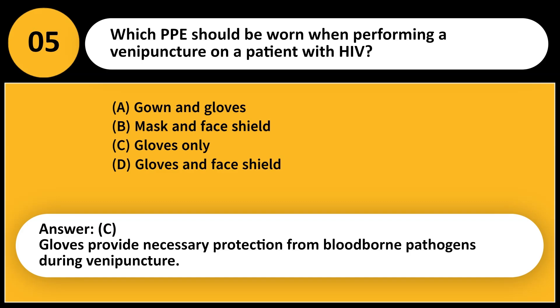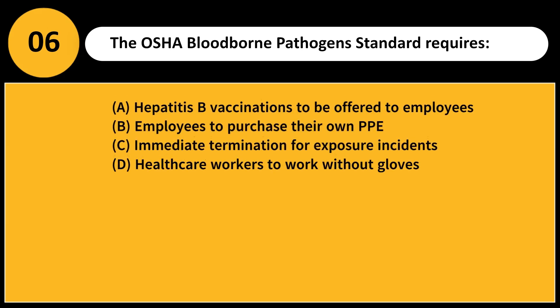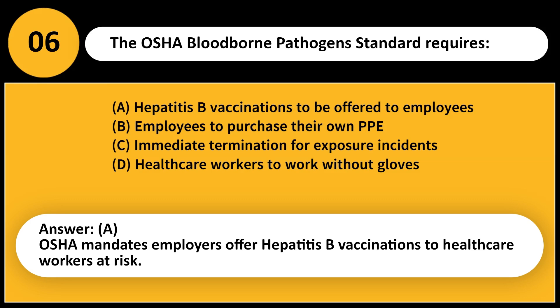The OSHA blood-borne pathogen standard requires: A. Hepatitis B vaccinations to be offered to employees. B. Employees to purchase their own PPE. C. Immediate termination for exposure incidents. D. Healthcare workers to work without gloves. Answer: A. OSHA mandates employers offer hepatitis B vaccinations to healthcare workers at risk.